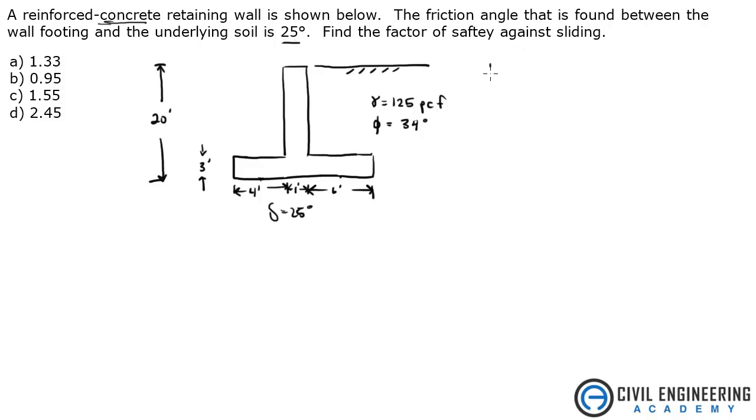If you're using your Civil Engineering Reference Manual, equation 37.57 says that the factor of safety against sliding is your force of sliding over your horizontal force acting on the wall, pushing the wall. So the first thing we're going to do is find this horizontal force and then we'll find the frictional force.